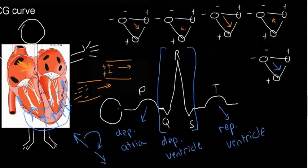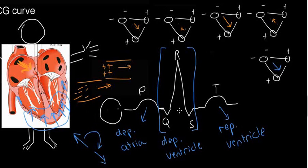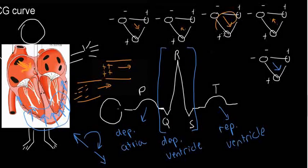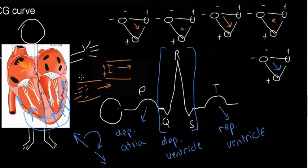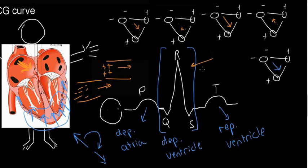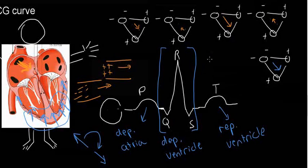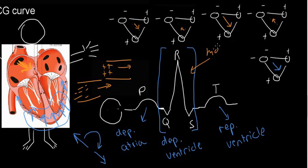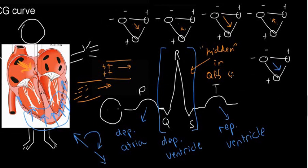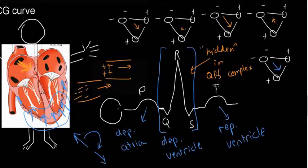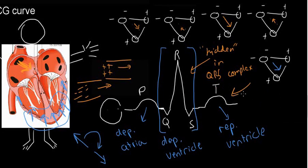Because we know we have repolarization of the ventricles, we have to have repolarization of the atria as well. The problem is that it's an event that takes place at this time point. And being that the QRS complex is such a massive deflection, we're not going to be able to read a small vector going in that direction. So you can say the repolarization of the atria is hidden in the QRS complex.